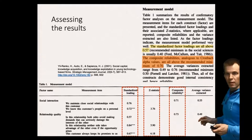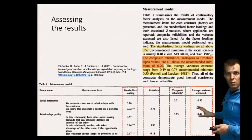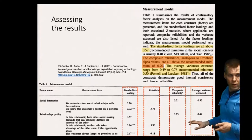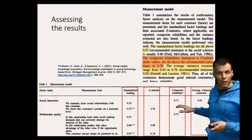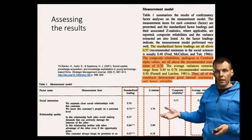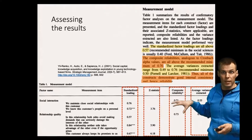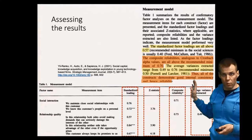They also have the average variance extracted statistic. This is often interpreted as the average reliability of an individual indicator in the scale, so it doesn't really measure the reliability of the scale as such. Scale reliability increases with the number of indicators, and composite reliability takes that into account whereas average variance extracted does not. They claim this indicates internal consistency, but these indices do not test internal consistency — they measure reliability assuming internal consistency.